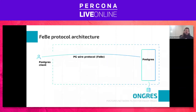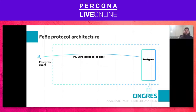Let's look at the architecture. It's pretty simple — we have a client, we have a Postgres server, and the messages that flow between them form the Postgres wire protocol, the front-end/back-end protocol mentioned before.